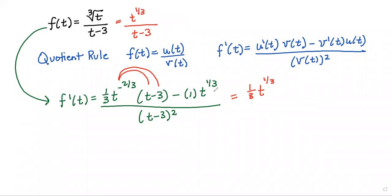Okay, so that's the first part of the distribution. Then we're going to distribute the minus 3. So the minus 3 times the 1/3rd is just 1, and then we'll get t to the minus 2/3rds, and then we still have a minus t to the 1/3rd. So it looks like we can combine those t to the 1/3rds on top.